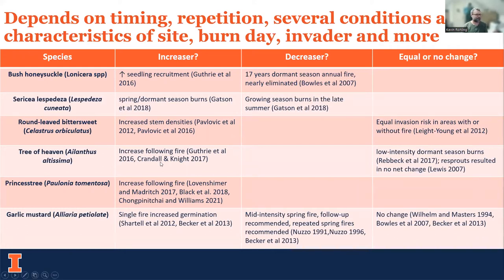Sericea lespedeza can be an increaser with spring and dormant season burns, but under growing season burns in late summer, there's increasing evidence that we can significantly reduce it using that method. Oriental bittersweet was found in one study where it didn't matter whether a place was burned or not in terms of invasion risk — essentially an equivalency between burned and unburned sites. Tree of heaven was found to be an increaser in one case, though a couple of studies found no change in stem densities, mostly because of re-sprouts.